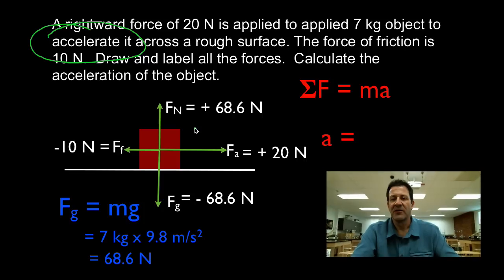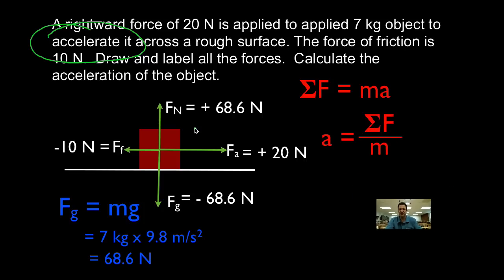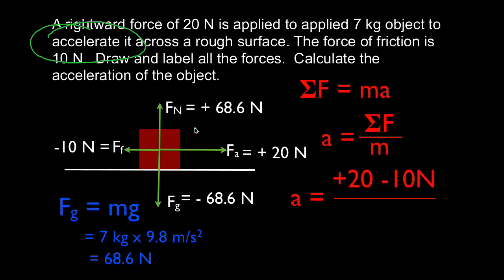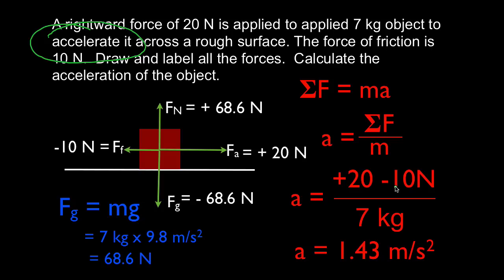Now we can apply Newton's second law. We rearrange the equation so that acceleration is equal to the sum of the forces divided by the mass. The only two forces we need to consider are the applied force and the friction force, because they are in the horizontal direction. So we add those: plus 20 Newtons plus negative 10, which is 20 minus 10, divided by the mass of 7 kilograms, which gives us positive 10 divided by 7. We get an acceleration of 1.43 meters per second squared. A Newton is a kilogram meter per second squared divided by a kilogram — the kilograms cancel, leaving meters per second squared.